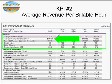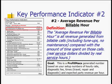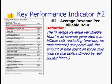Tom, why don't you define this KPI for us? Our second key performance indicator is called average revenue per billable hour. This is all revenue generated from billable calls, including tune-ups but no maintenance, compared with the amount of time spent on those calls — that is, real service dollars divided by real service hours.